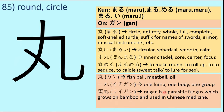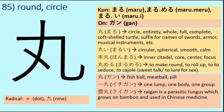Looking at onyomi usages of the reading gan: gan indicates fish ball, meat ball, or pill, which is round in shape. Then we have ichigan, meaning one lump, one body, or one group — ichi is the numeral one. Then we have raigan, which is a parasitic fungus that grows on bamboo and is also used to prepare some Chinese medicines. The radicals involved in this character are the dot and the nine — so there are two radicals: dot and nine.